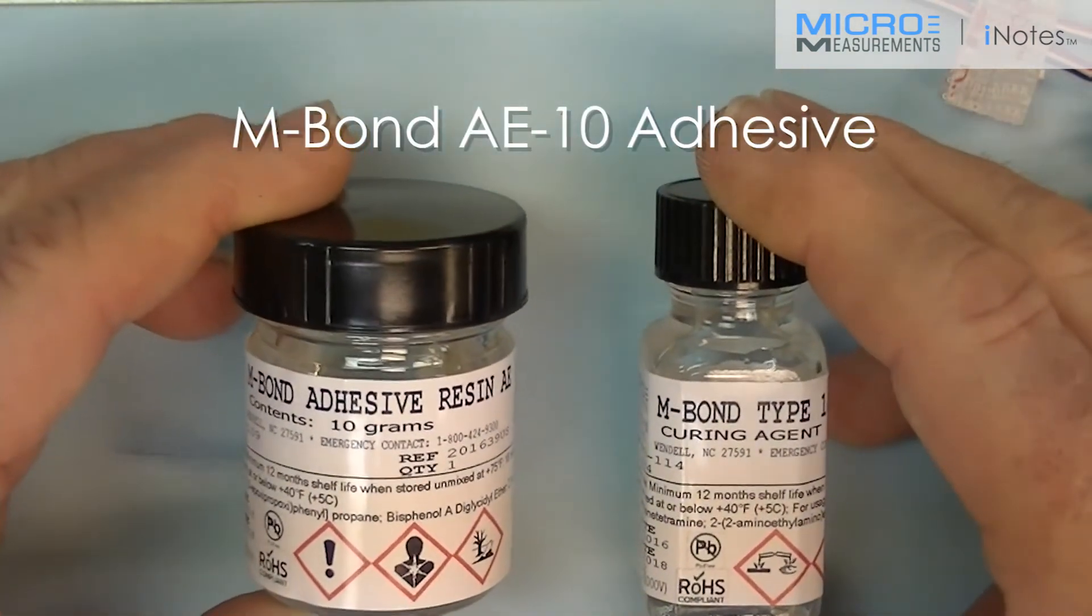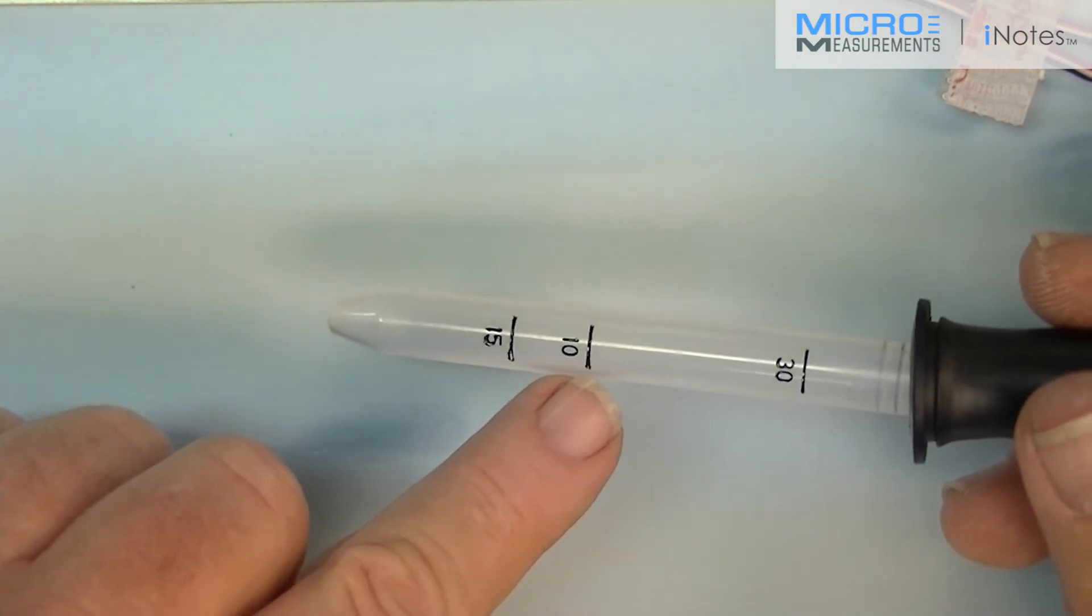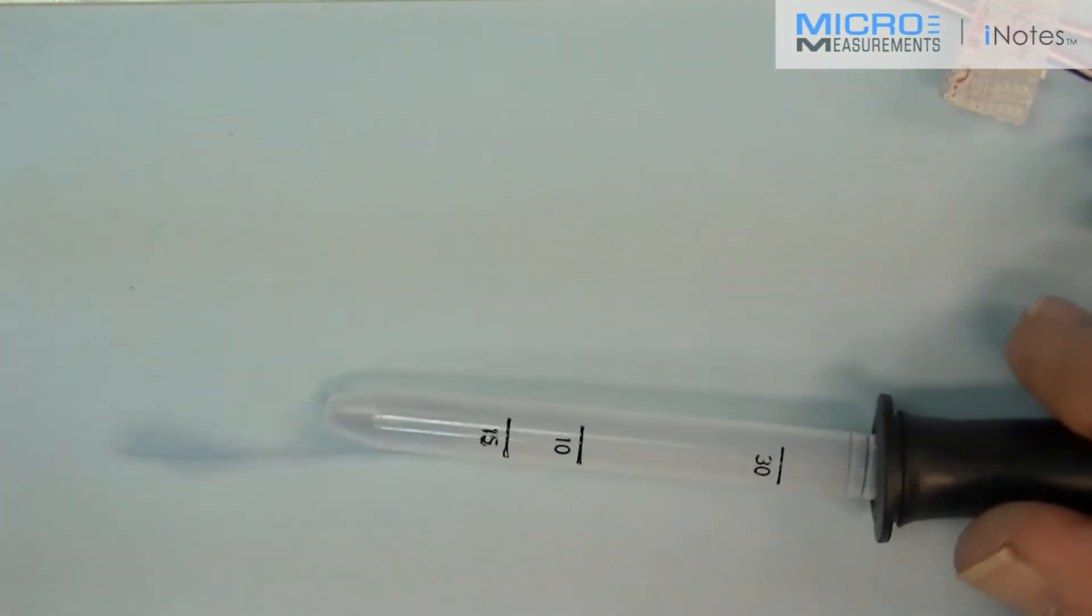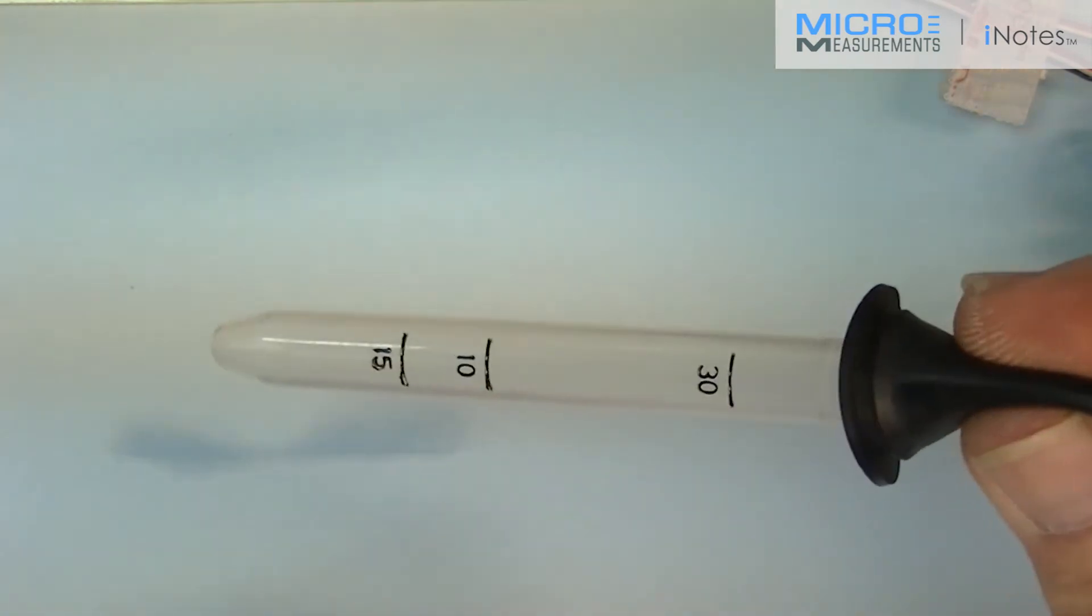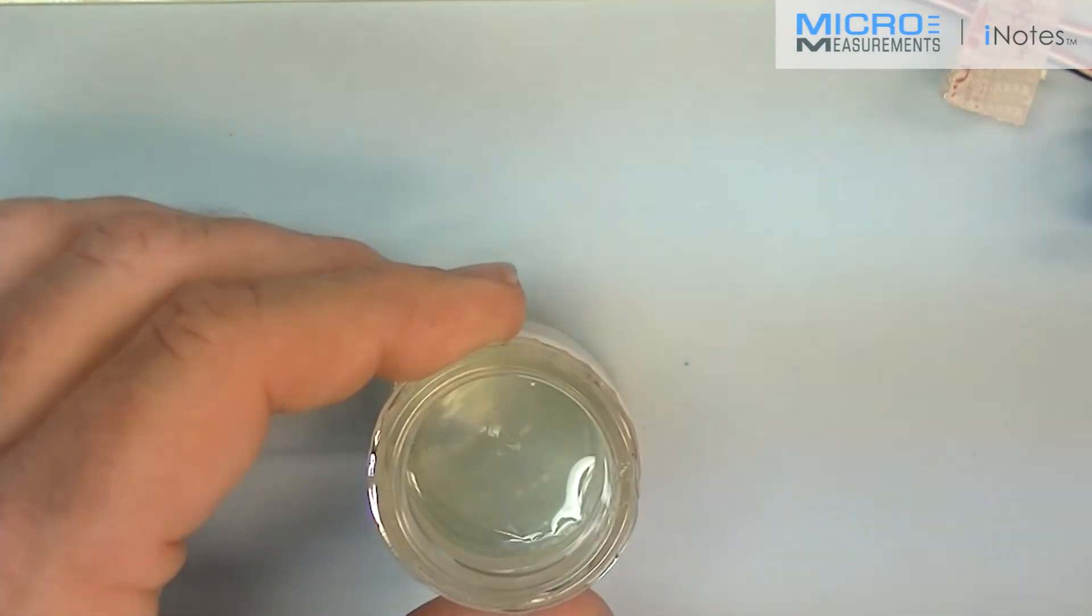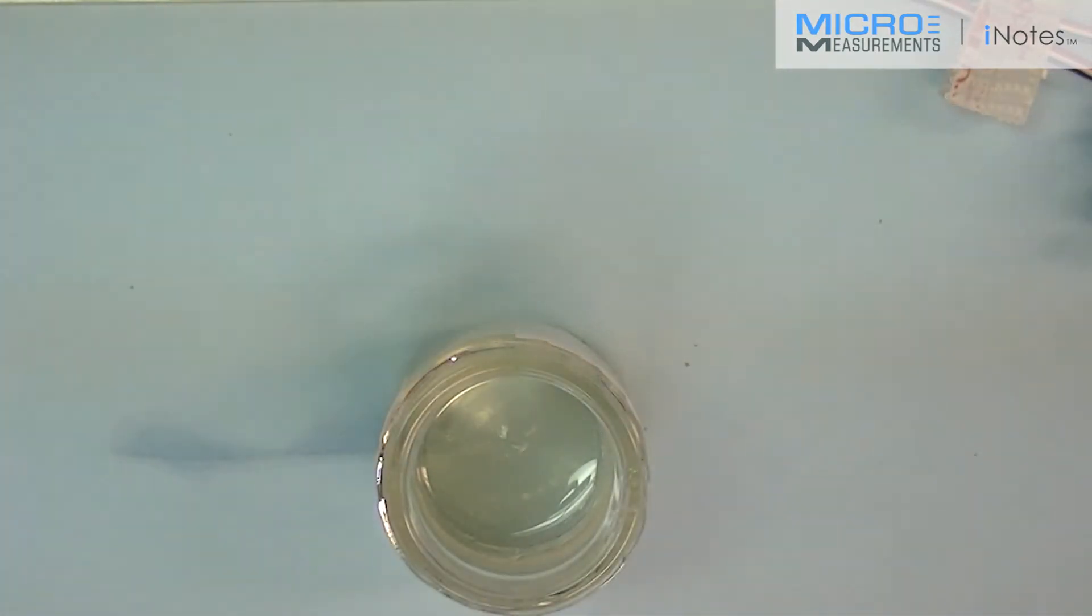The next step will be to mix the AE-10 adhesive system and curing agent. We will carefully measure out and dispense the adhesives or the curing agent to the mark 10 for type 10 curing agent. Remembering that the meniscus, the lower line, is the one that we want to use to measure that. First thing you do is you squeeze the bulb tight. Draw up the adhesive to the type 10 mark. Dispense the adhesive into the center of the resin jar. Immediately discard the pipette as it's considered contaminated and reseal the curing agent. It's very hygroscopic and you don't want it to absorb too much moisture.